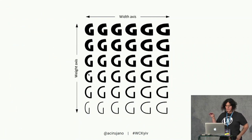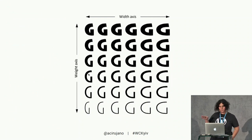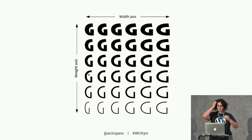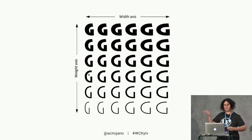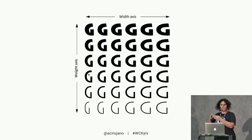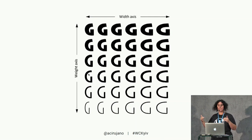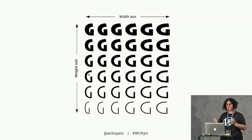A variable font can contain many different axes that can do different things at the same time. In that graphic, you can see the characters changing the width axis and the weight axis simultaneously.